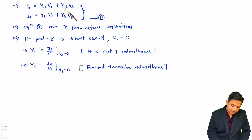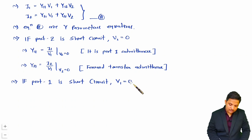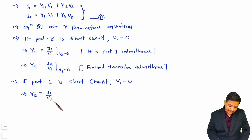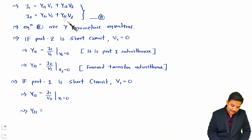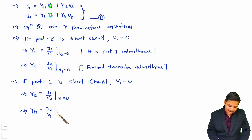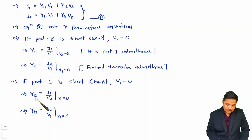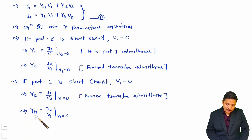To measure Y12 and Y22, you set V1 = 0 by providing a short circuit at port 1. With port 1 short circuited and V1 = 0, you get Y12 = I1/V2 and Y22 = I2/V2. Y12 is the reverse transfer admittance, and Y22 = I2/V2 is the port 2 admittance.